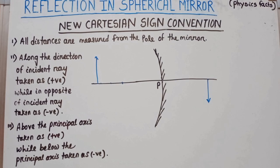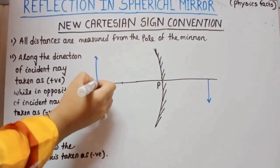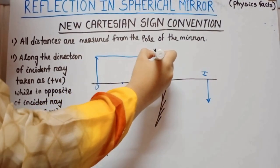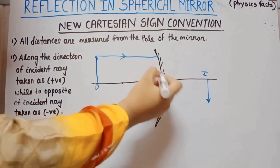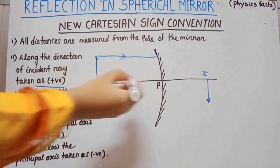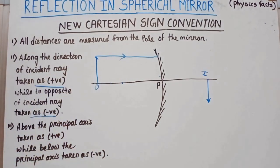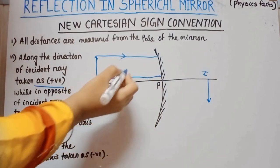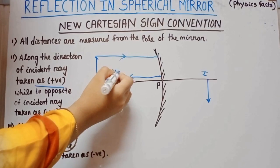First, all distances are measured from the pole — from pole to object or from pole to image. If the measured distance is along the direction of the incident ray, that measurement is taken as positive. If the measurement is in the opposite direction of the incident ray, that distance is taken as negative. When we calculate the object distance — from pole to object — that is in the opposite direction of the incident ray, so object distance is taken as negative.